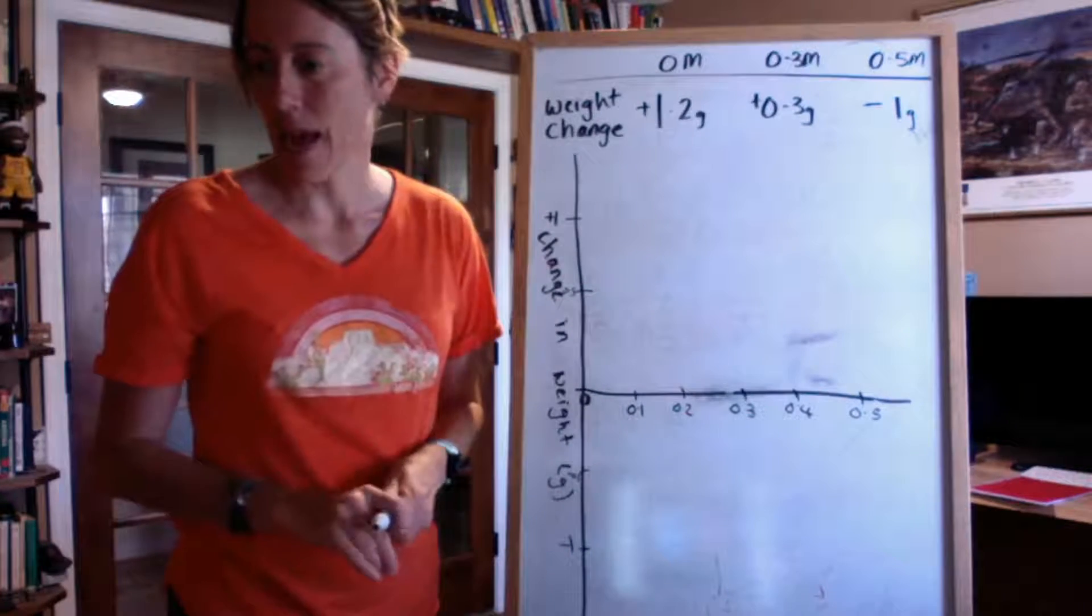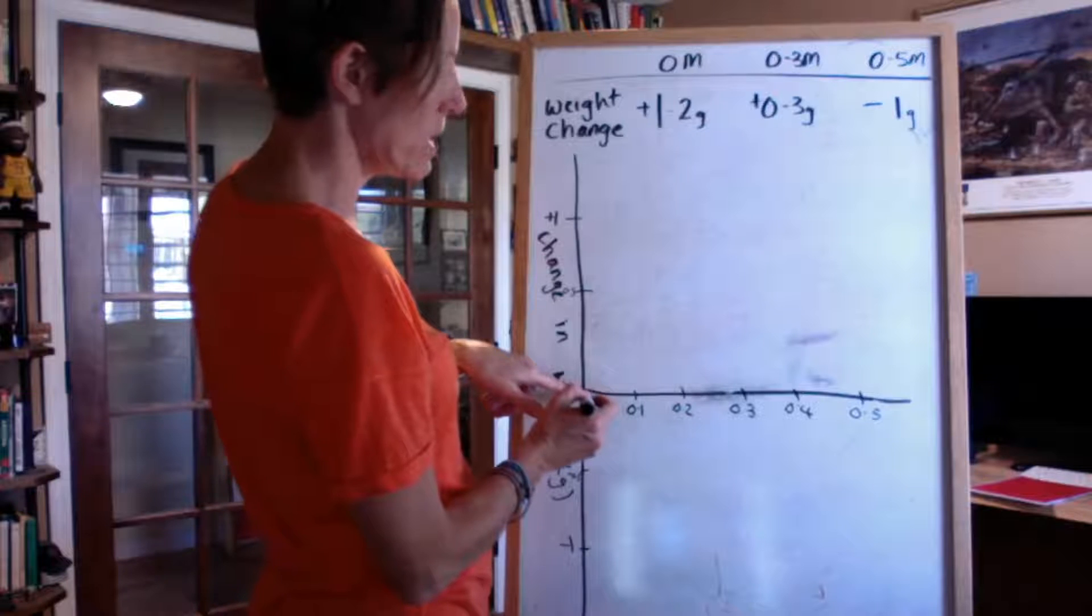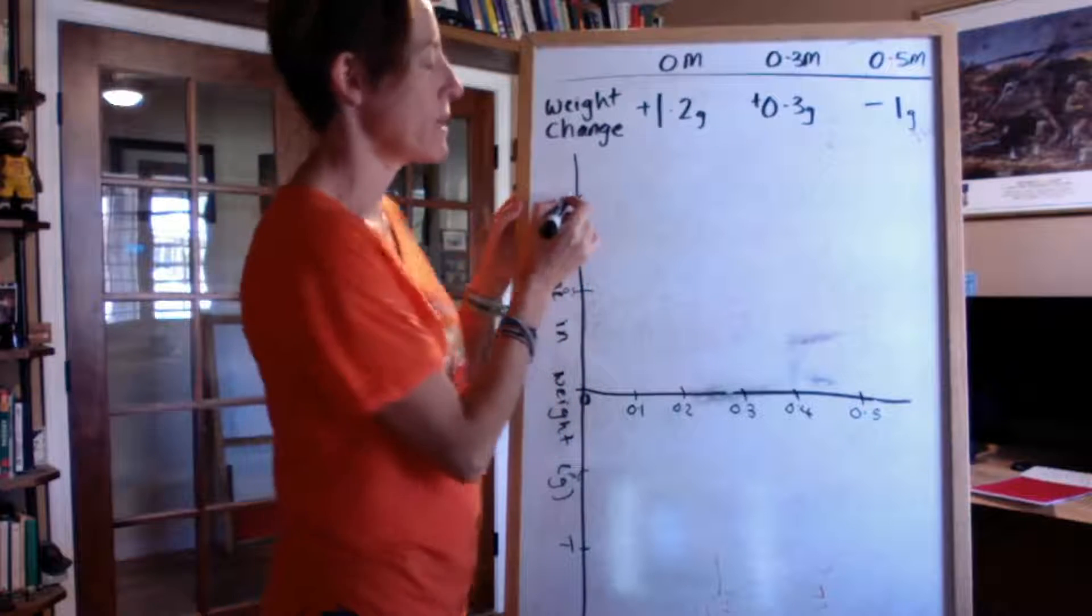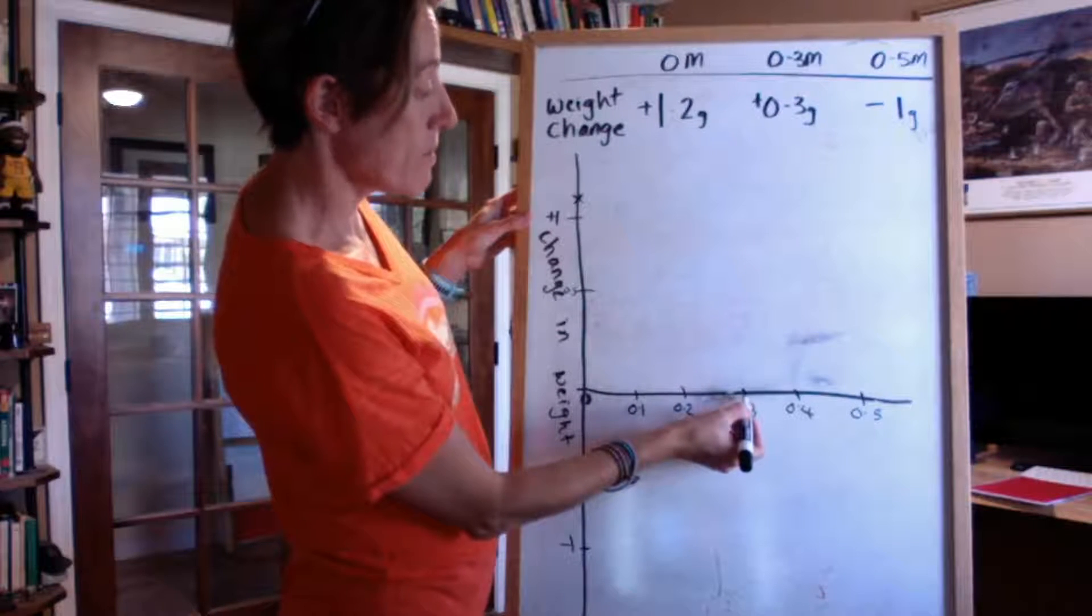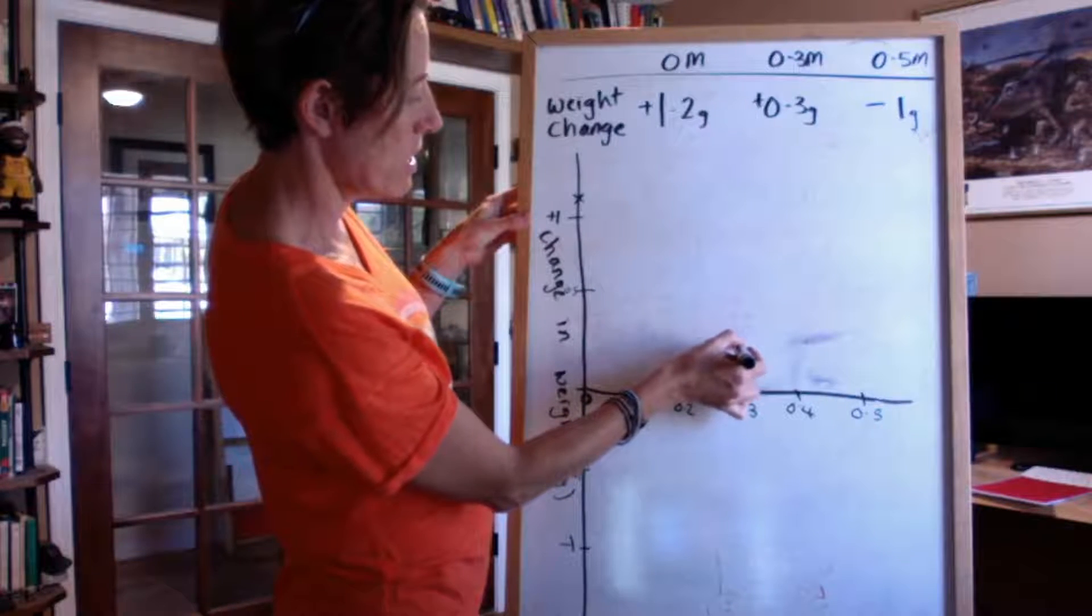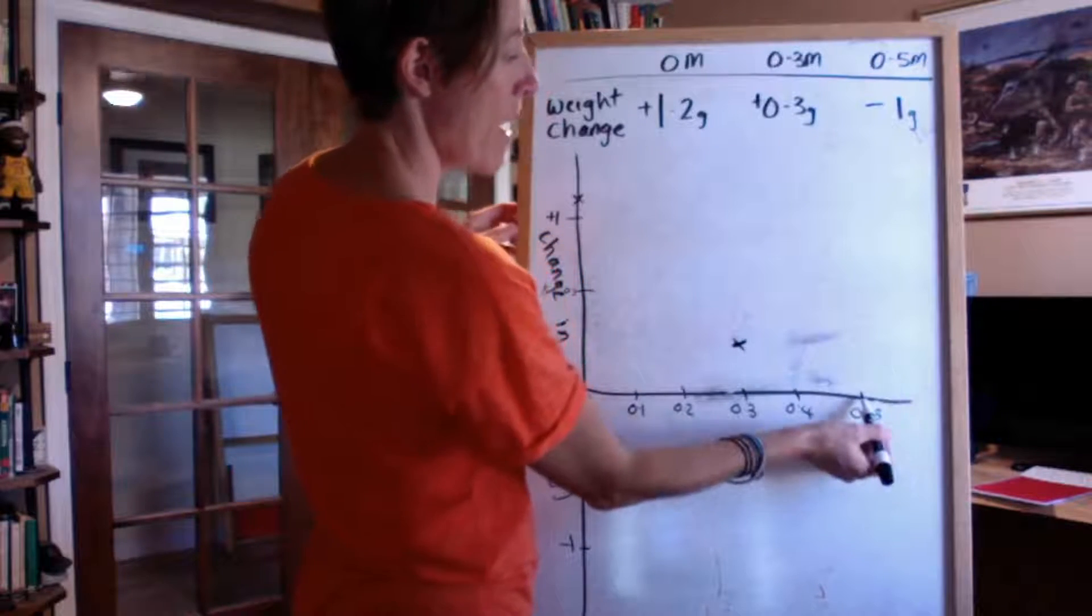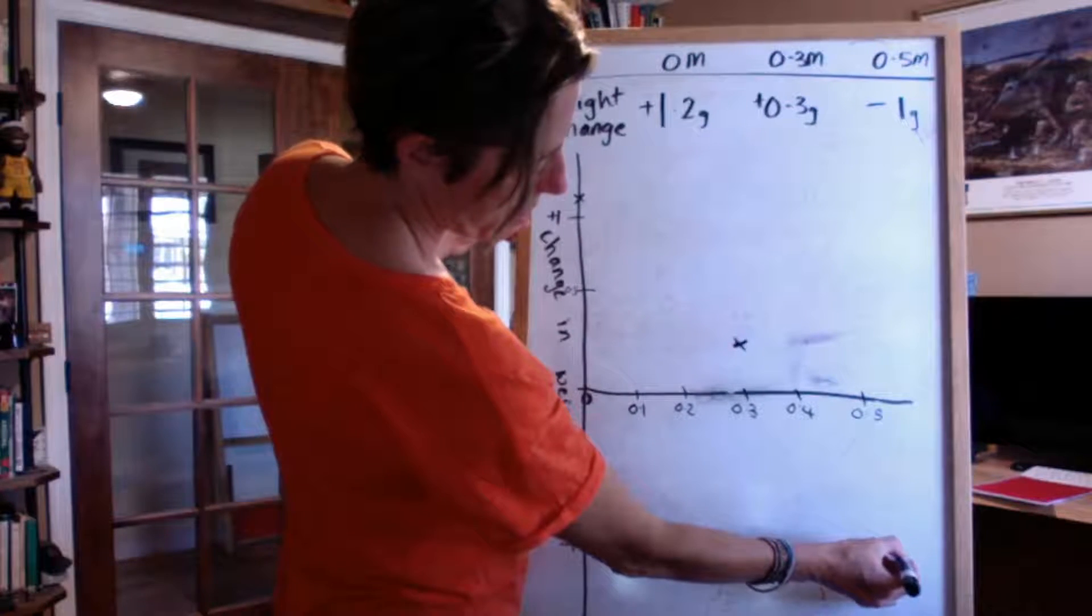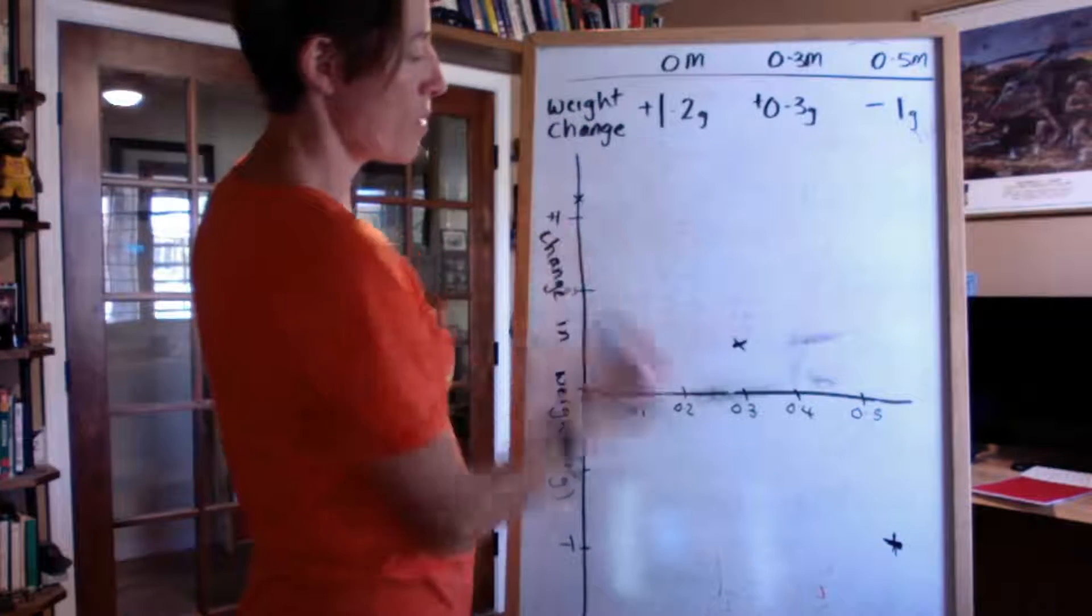So then I can go ahead and graph my data. When I bathed my potatoes in 0 moles, I gained 1.2 grams. That's about here. When I bathed my potatoes in 0.3 moles, I gained 0.3 grams. So it's going to be about here. Again, yours is going to be more accurate than mine because you'll have graph paper. And then 0.5, we lost 1 gram. So it's going to be somewhere here. Okay. So you can see I've got my points plotted on here.